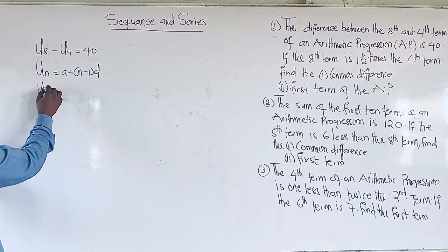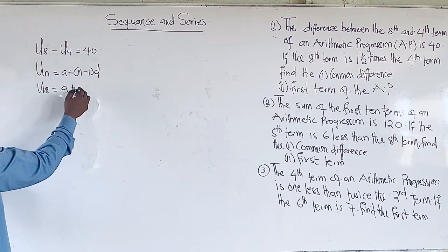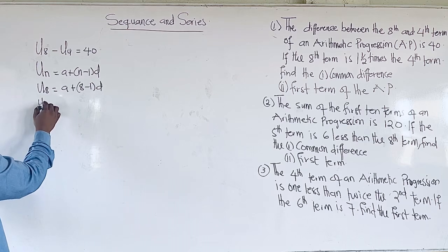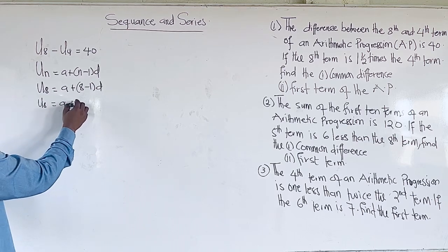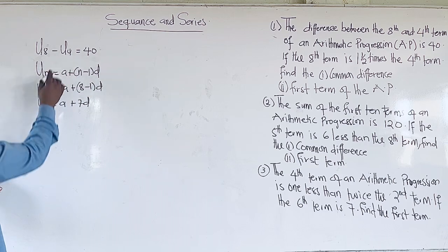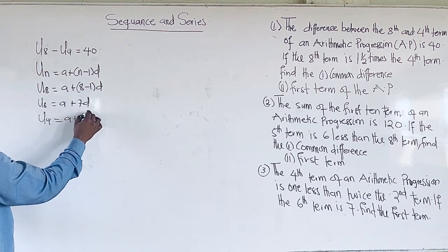So our 8th term is going to be A plus, where N represents the 8, so we put 8 minus 1 multiplying D. Our 8th term is going to be A + 7D. We use the same formula to break the 4th term, and we are going to have A + 3D.